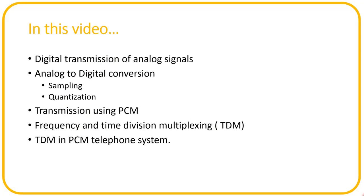In this video, we will learn about digital transmission of analog signals. We will also look into how an analog signal can be converted into a digital signal using sampling and quantization. We will also see how we can transmit it using a pulse code modulation scheme. We will look into frequency and time division multiplexing for sending different information channels through a single line, and as an example, we will look into the time division multiplexing in PCM telephone systems.